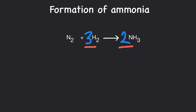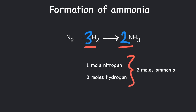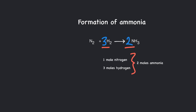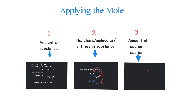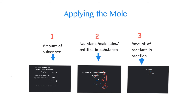In the formation of ammonia, 1 mole of nitrogen reacts with 3 moles of hydrogen to give 2 moles of ammonia. With this knowledge, you are already equipped to solve any numerical problem!